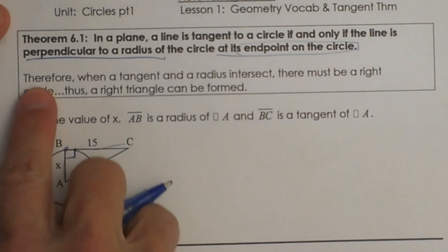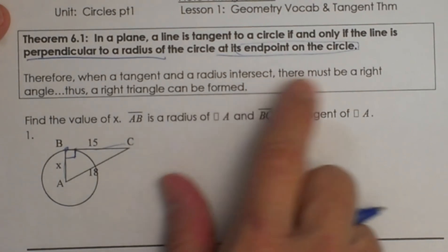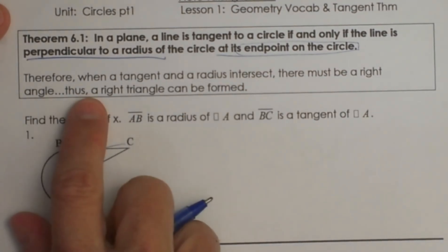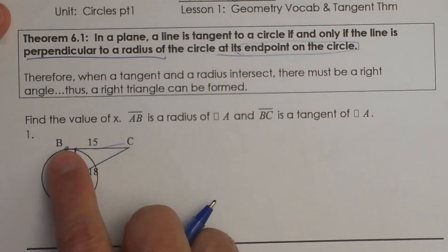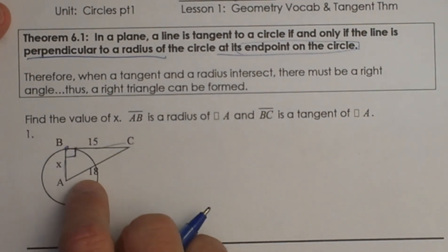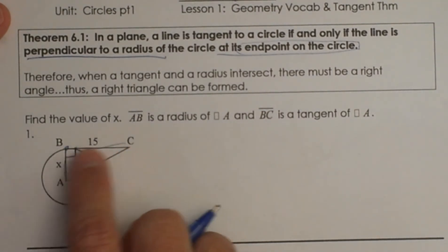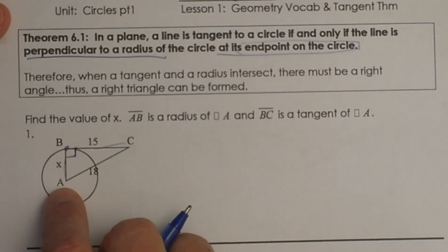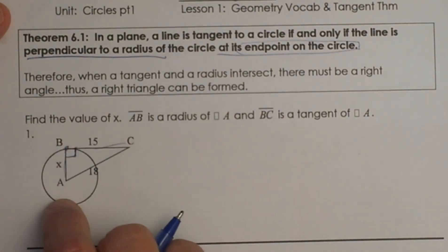Any time you have a tangent and a radius and they intersect, there must be a right angle. Thus a right angle can be formed with a radius and a tangent. Once you draw that right angle in, you can see you have created a right triangle. So when you are dealing with tangents and circles you are going to have right angles all the time, so make sure you draw those in and look for right triangles.